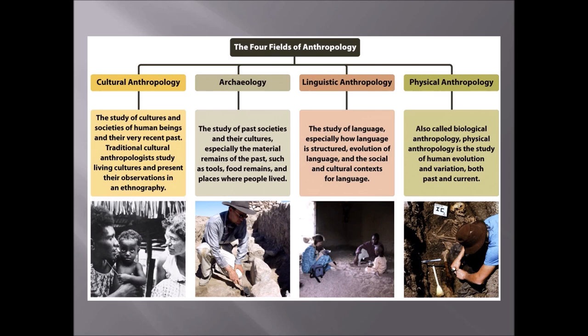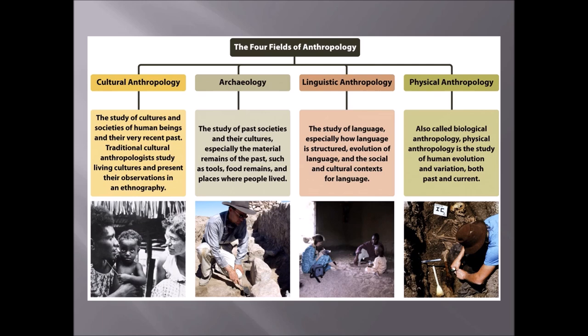Finally, we get to physical anthropology, which surprises a lot of people. In physical anthropology we're actually looking at the human body as an organism — we study bones, how bodies change and adapt to different environments. We deal with living people, dead people, fossilized people, and we do forensics. Here in the United States we also study primates as part of physical anthropology, which I'll explain in a bit.